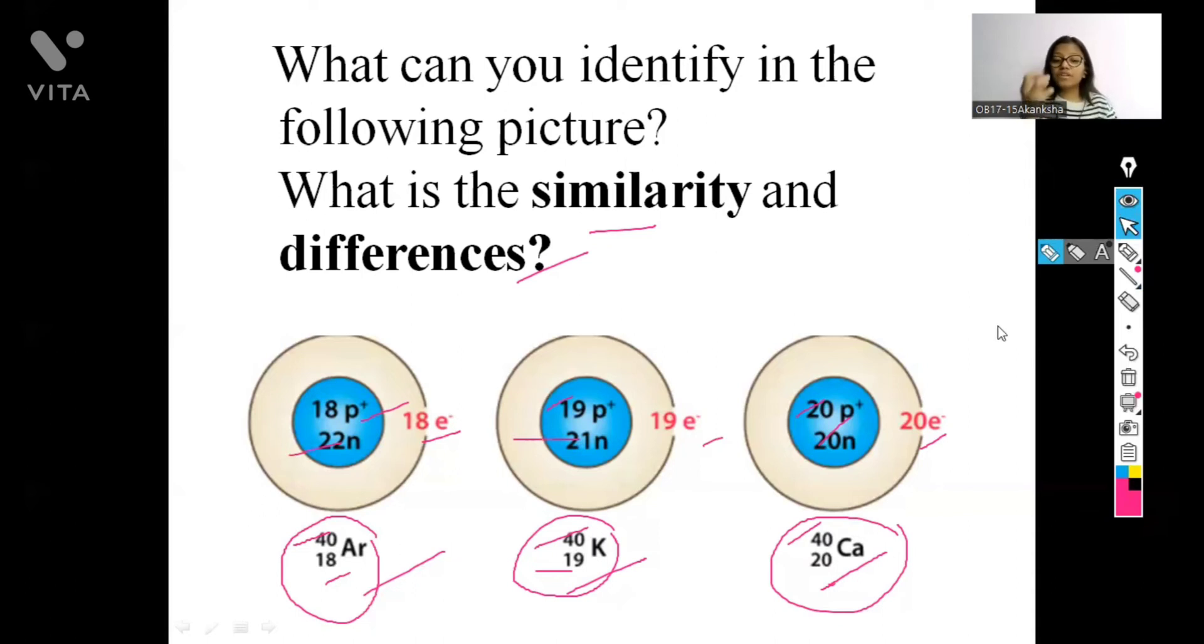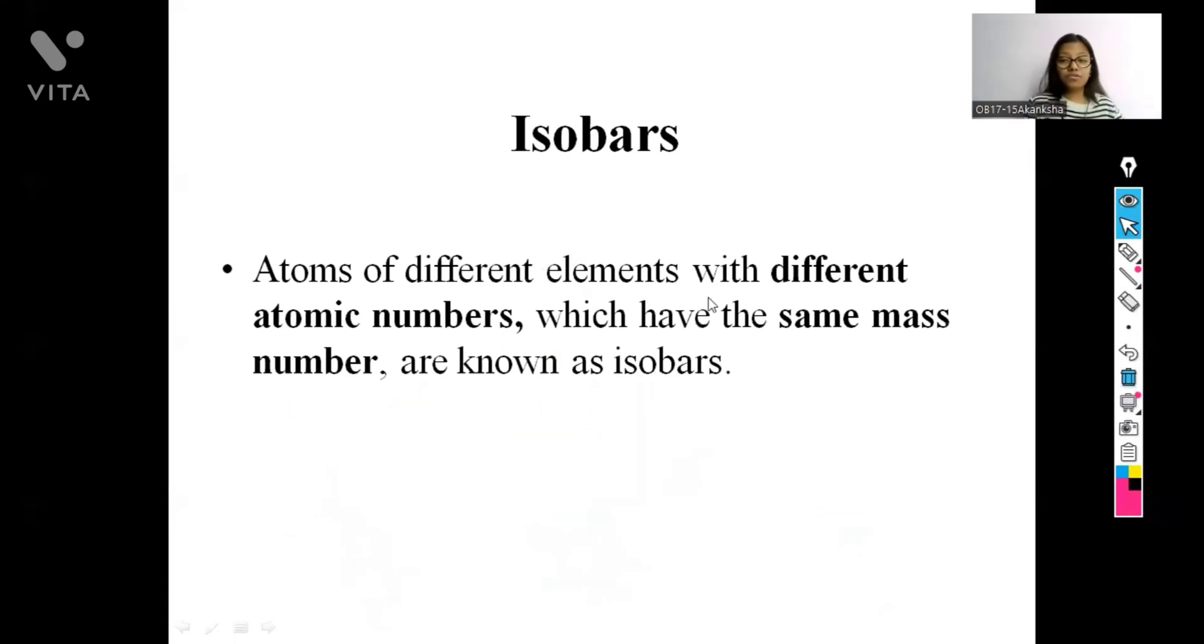So, now we will see what are these elements called which have similar atomic masses, but they have different atomic number. Okay, so now moving on ahead, we will see the proper definition of isobars.